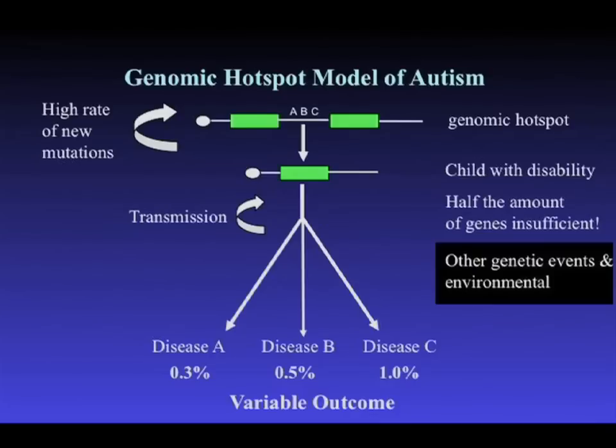This model helps to explain the comorbidities seen between these various diseases and explains both inherited and de novo events occurring for these large CNVs. I think it's important for setting the stage for thinking about autism and developmental delay more generally.